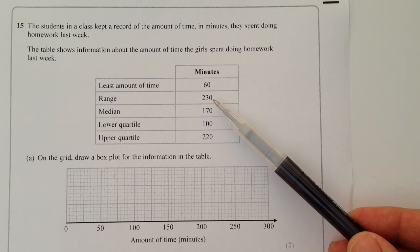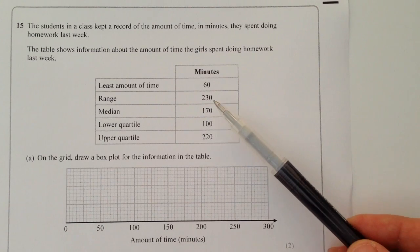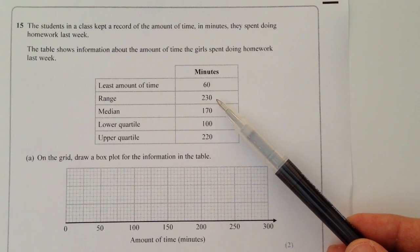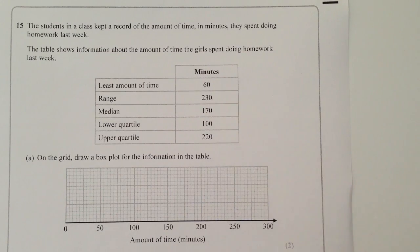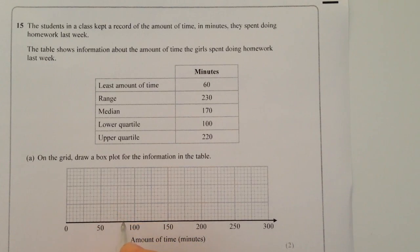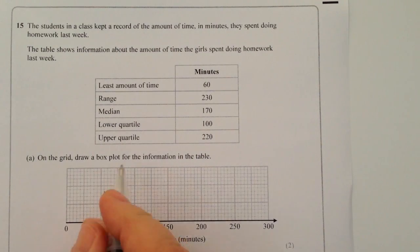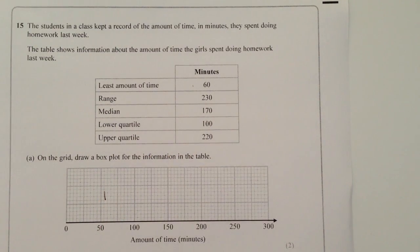So in other words, the highest value on this particular box plot is going to be 60 plus 230, because we're going to start at 60 which is about here and that's representative of the 60 mark which is this one here, and then we've got the range which is 230.